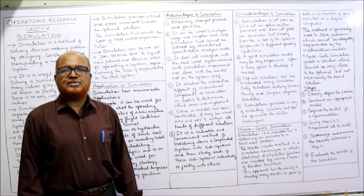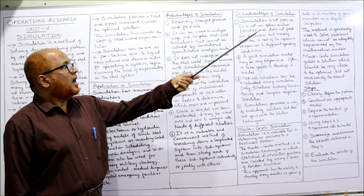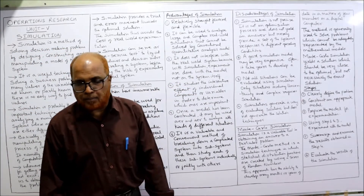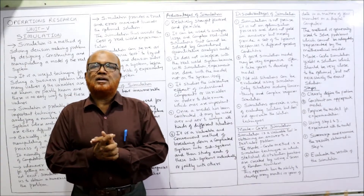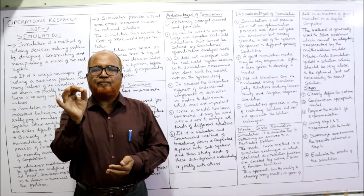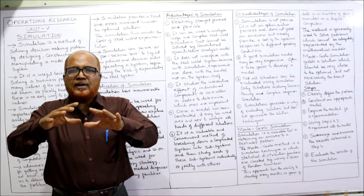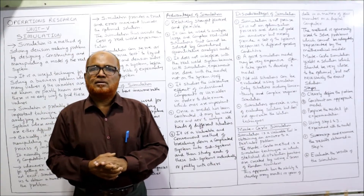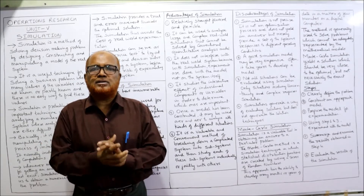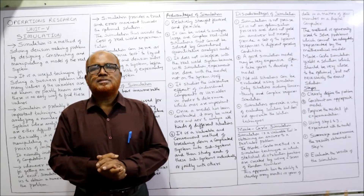There are also disadvantages of simulation. The first disadvantage is that simulation is not precise — it is not an optimization process and does not yield a single answer, but merely provides a set of system responses to different operating conditions. Simulation will not give a perfect or exact solution to a problem; it simply provides different solutions under different conditions, giving only an approximate solution.